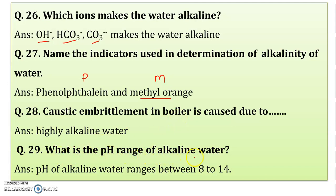What is the pH range of alkaline water? You must know when you are saying that the water is alkaline. The pH range for alkaline water ranges between 8 to 14. If it is above 7, then the water fed into the boiler is called alkaline water.